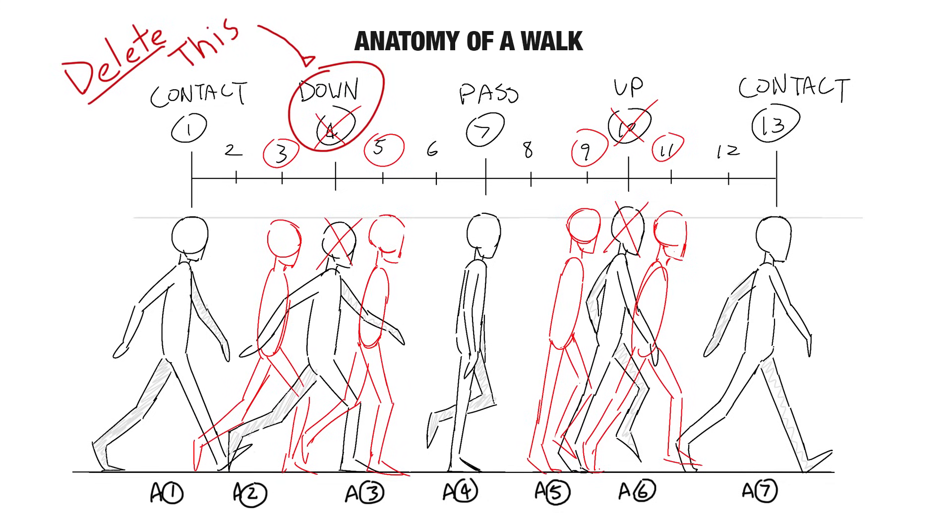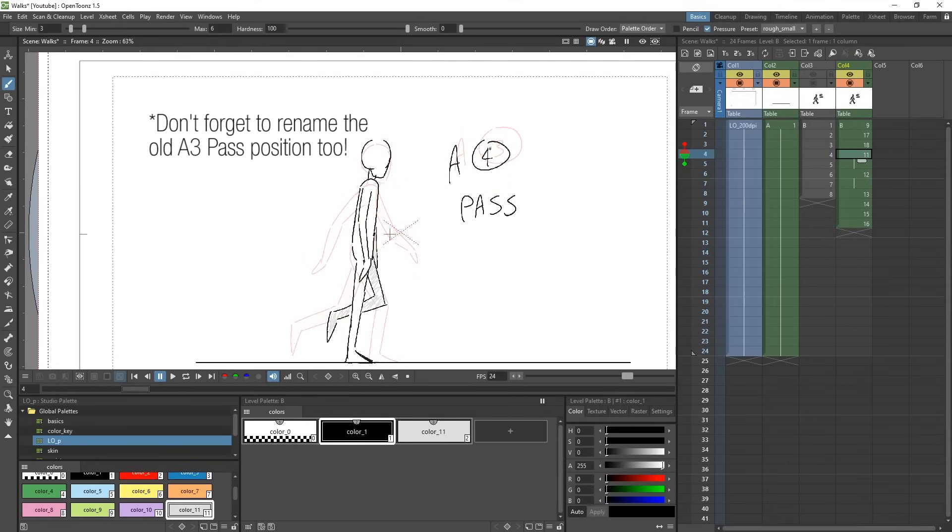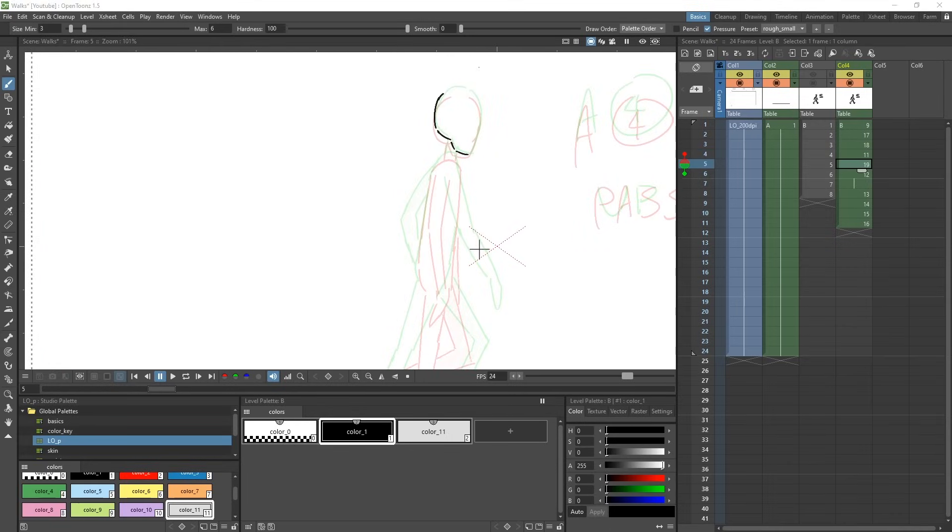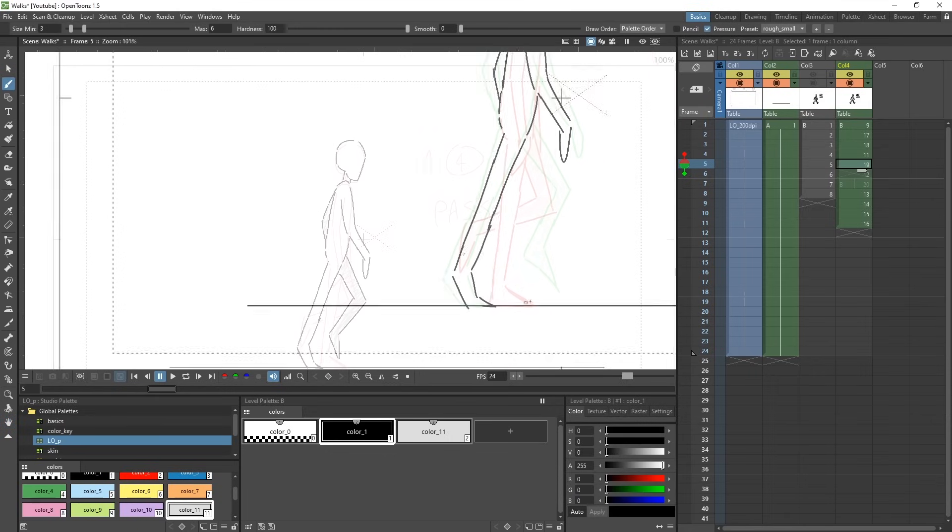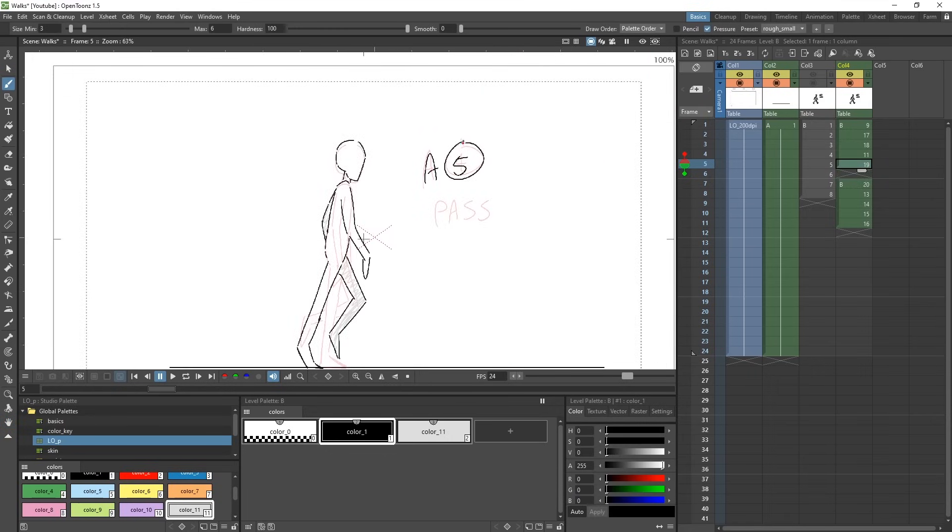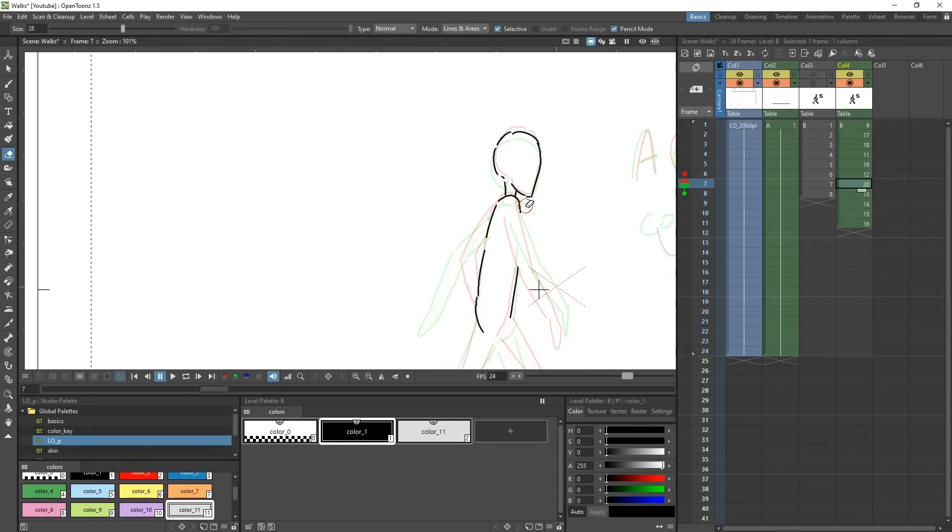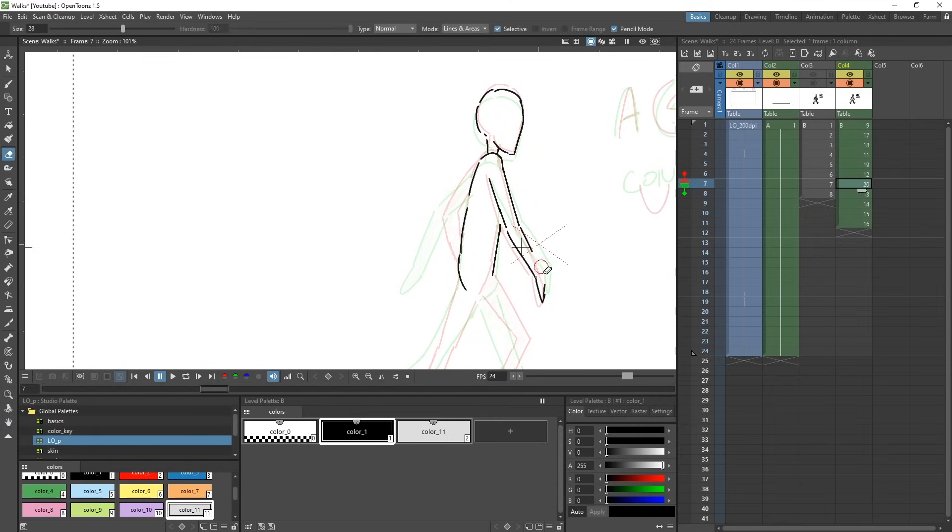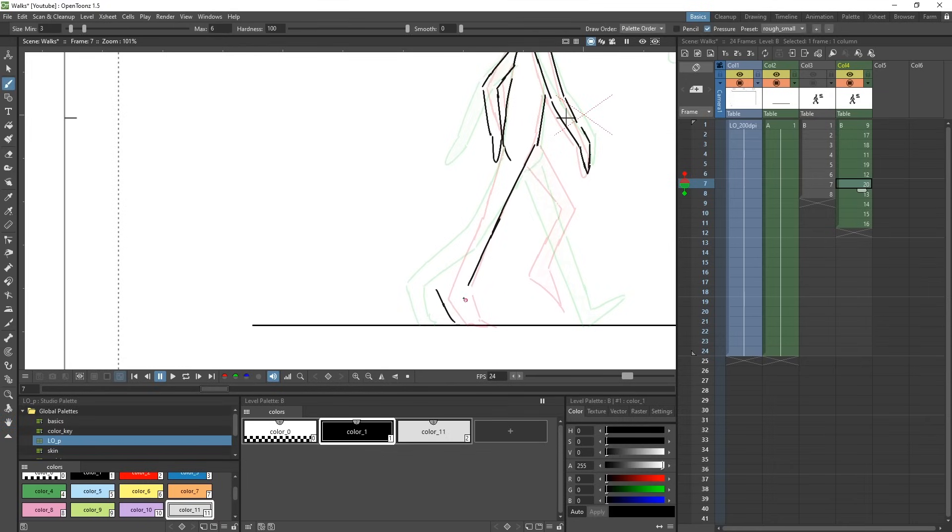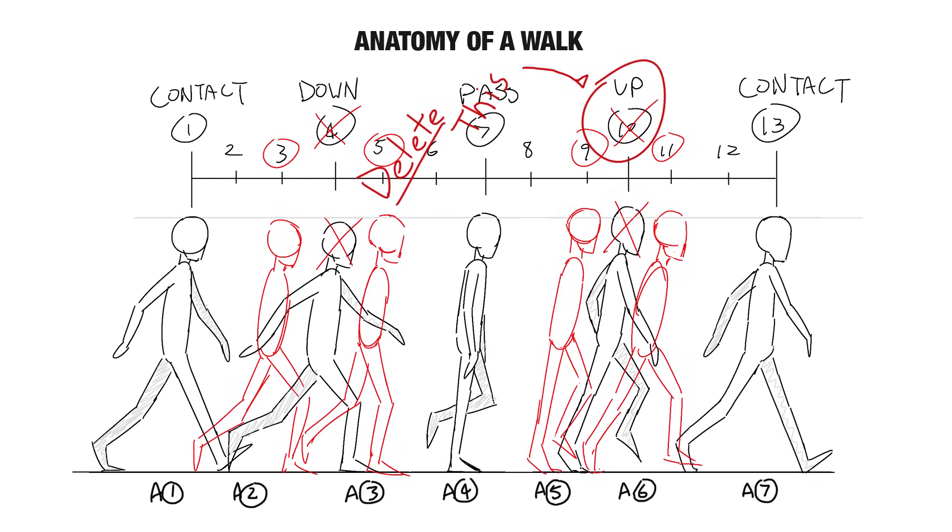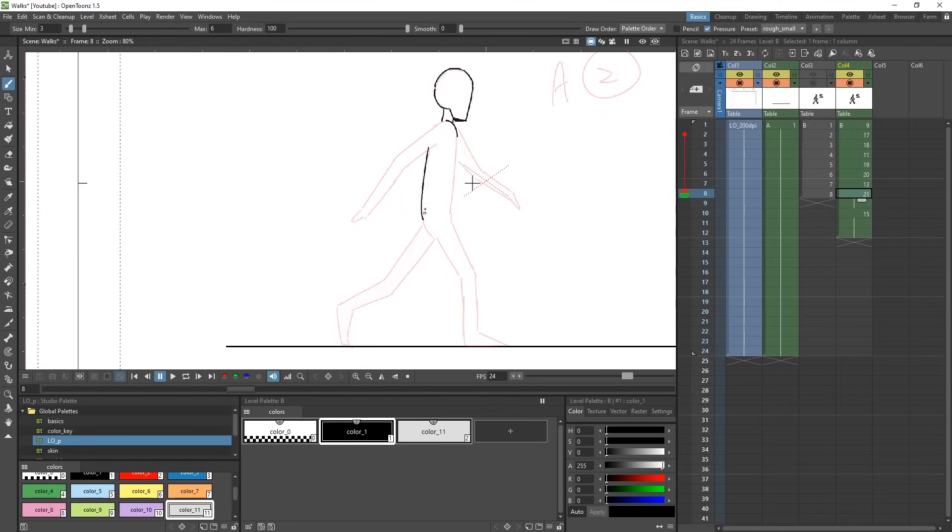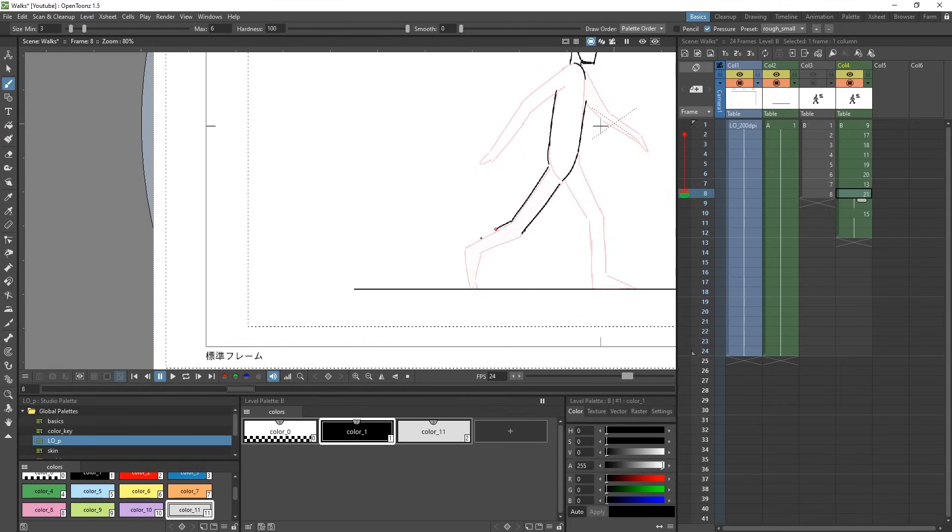We then remove the down pose and repeat what we did for the up pose. This is what the new A5 drawing would look like. And this is the new A6 drawing. Delete the old up pose and we now do what we just did, but for the other leg. Again, use your onion skin to make this much easier.